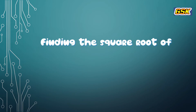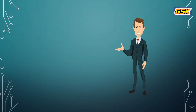In this video we are going to find the square root of 5 plus 2 root 6. We should write 5 as the sum of two numbers and take 6 as the product of those same two numbers.